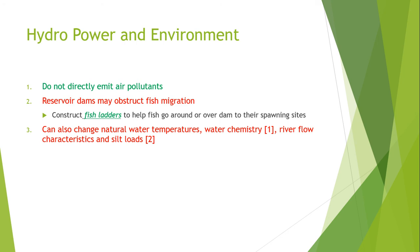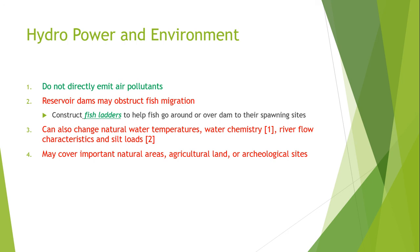Flooding land for a hydroelectric reservoir has an extreme environmental impact, as it destroys forests, wildlife habitat, agricultural land, and other scenic lands. In many instances, such as the Three Gorges Dam in China, entire communities have had to be relocated in order to create the reservoir.